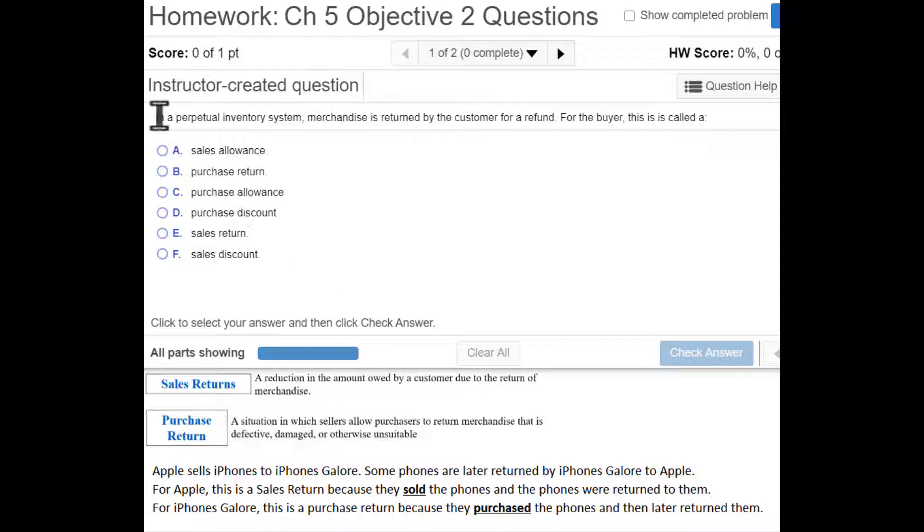So now let's look at this question. In a perpetual inventory system, merchandise is returned by the customer for a refund. For the buyer, what is that return called? Well, the buyer did the purchasing, so that's called a purchase return.